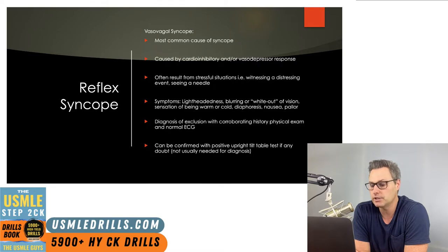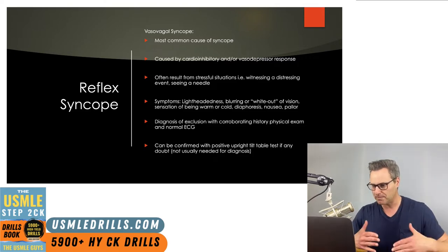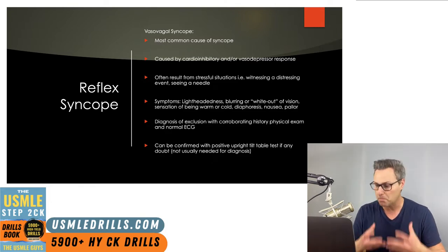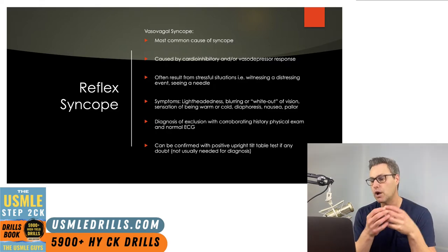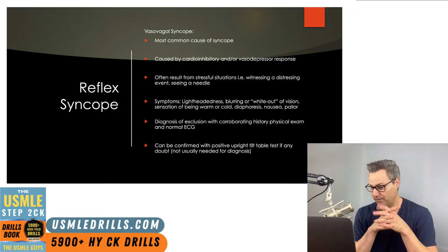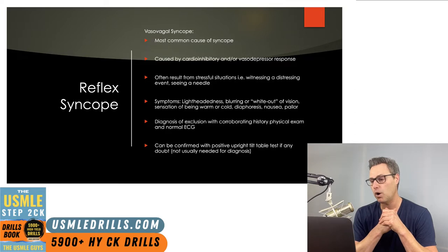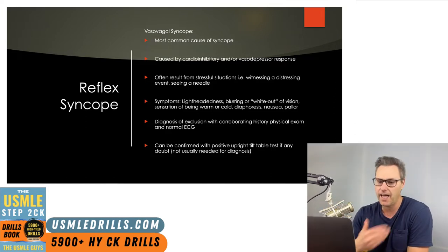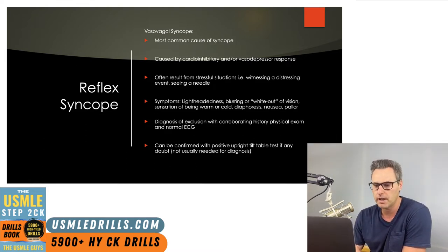Vasovagal syncope is a diagnosis of exclusion after you've done workups for other causes. It can be confirmed with an upright tilt table test, where the patient is strapped into a rotating table that moves them slowly from supine to upright, and signs of syncope like bradycardia, hypotension, or syncope itself are noted. You really only perform this test if you think vasovagal syncope is the cause but still have some doubt — it's not something routinely done. Don't do the tilt table test first.